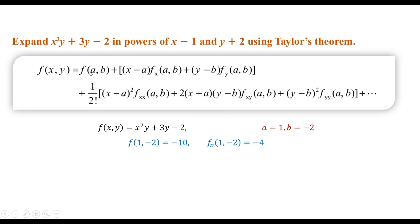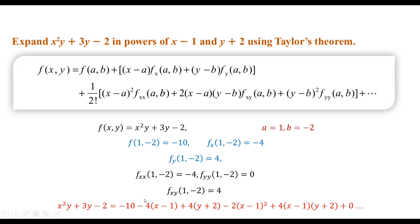We calculate the function value at (2, −2) as −10. The first-order partial derivative with respect to y at (2, −2) is 4. The second-order partial derivatives at (2, −2) are −4, 0, and 4. Substituting these values into the revised Taylor series expansion, the third-degree polynomial in terms of x and y is: −10 − 4·(x−2) + 4·(y+2) − 2·(second-order terms) + …. This is the process to expand a function of two variables about any point (a, b) using the Taylor series theorem.